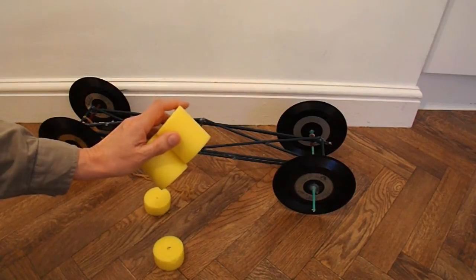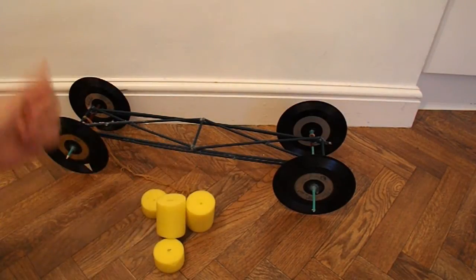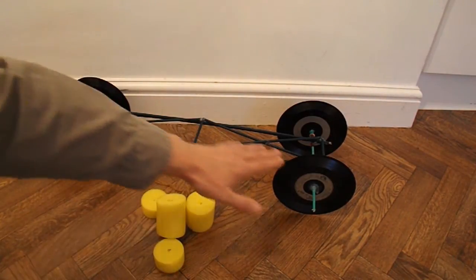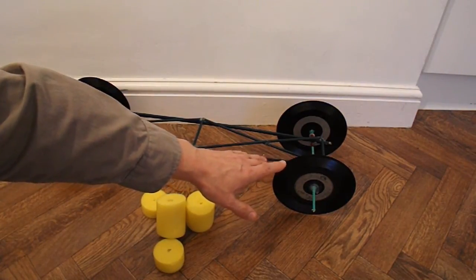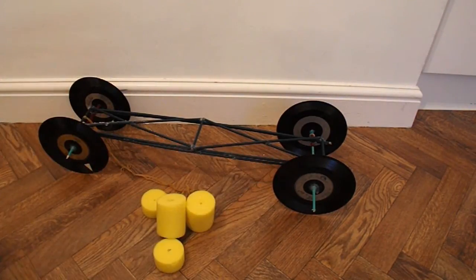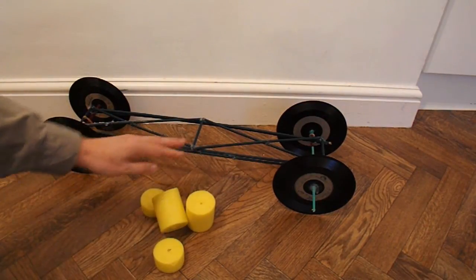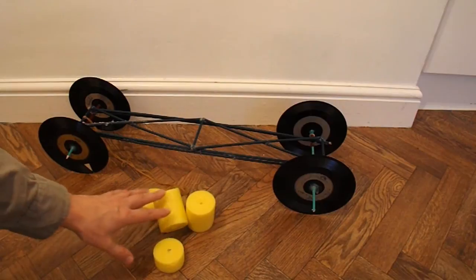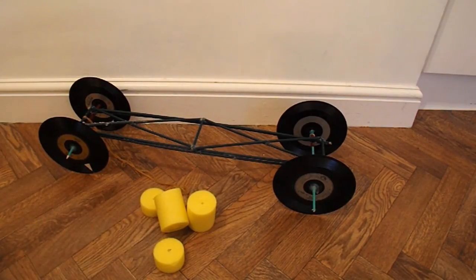It actually stopped not far inside my hallway. Whereas the vinyl wheels, the records, started slower, needed less power but it overtook the sponge wheels and carried on to the end easily.